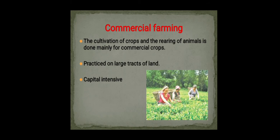In commercial farming, high yield variety seeds, chemical fertilizers, insecticides, and pesticides can be used. It also includes plantation farming, where a single crop is grown over a wide area — for example, tea, coffee, and rubber.